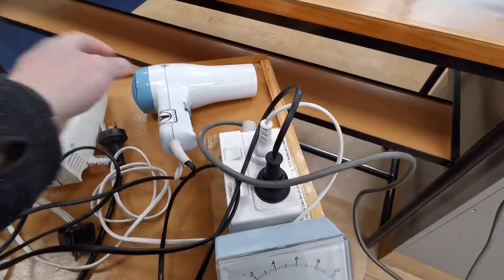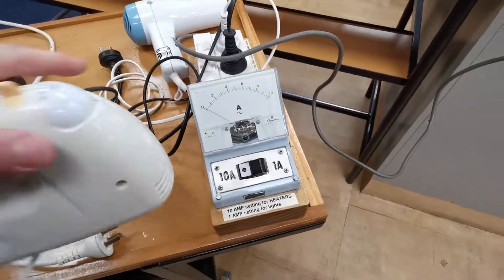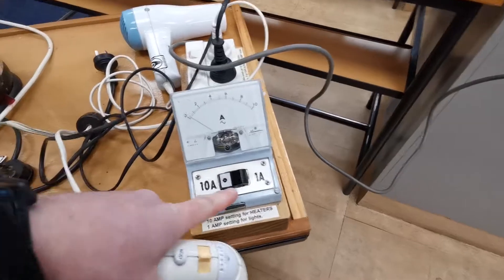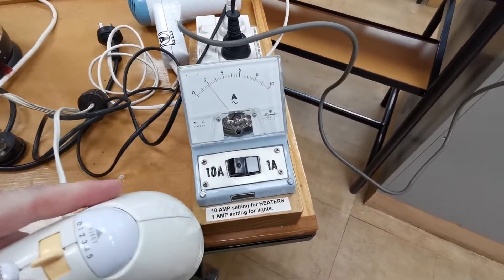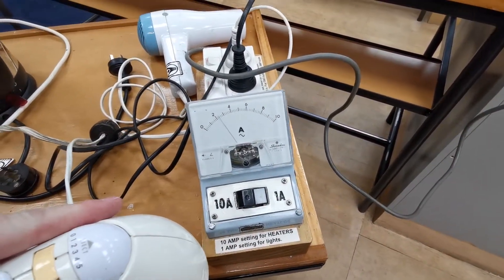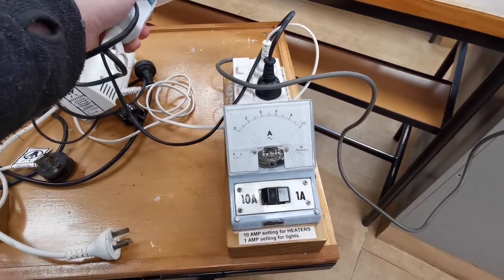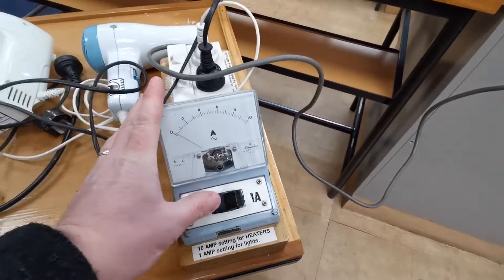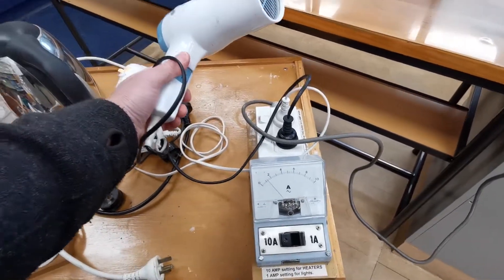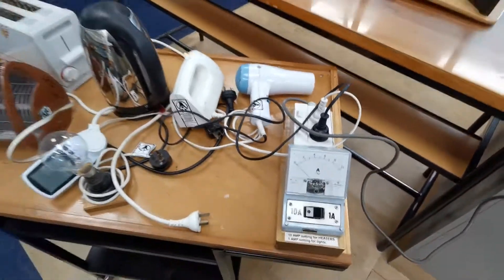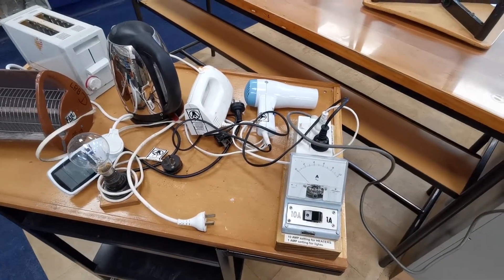And then we can try the egg beater. It doesn't draw very much, and so we put it to the 1 amp setting. We're seeing it's doing 0.2 of an amp, so that huge difference. Where if we turn the hairdryer on at that 1 amp setting it goes straight off the scale and so we don't want it to do that. So that's another way of looking at power drawn by a whole range of different household appliances.